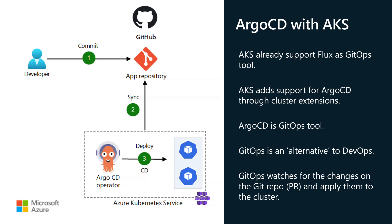One of the main advantages of ArgoCD over Flux is that ArgoCD has a built-in dashboard that shows you all the applications deploying and deployed into your AKS or Kubernetes cluster. It also shows you the resources within each application — the deployments, pods, services — and the status of these applications.